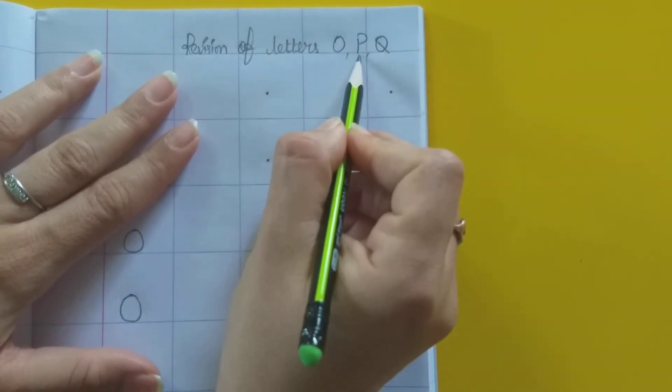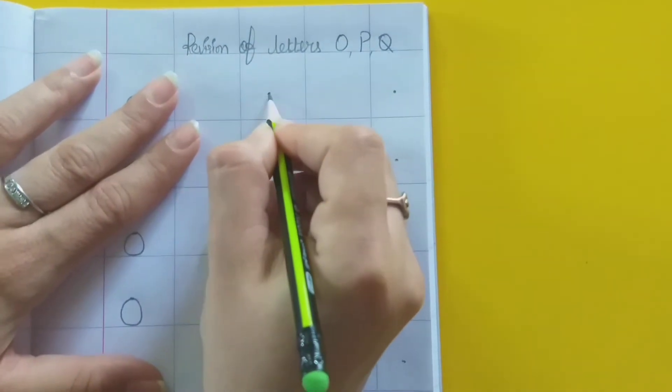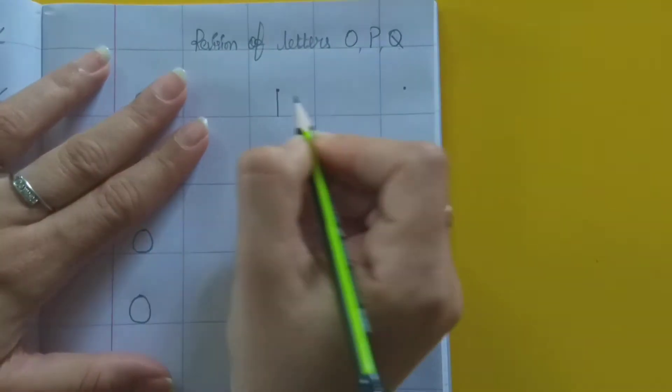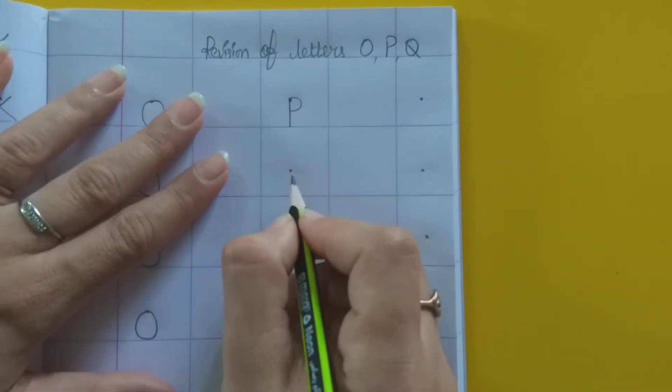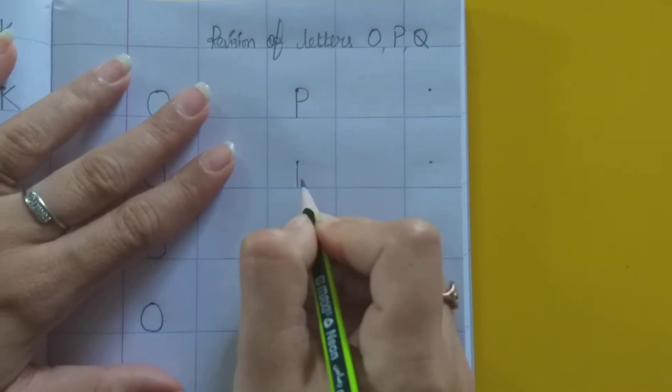Abhi ham next letter trace karenge. Konsa hai woh? P. Standing line. Then make a curve and close the curve.